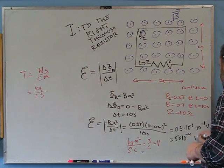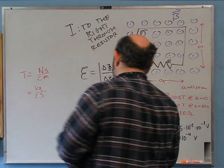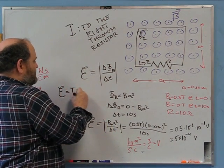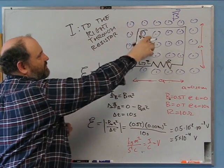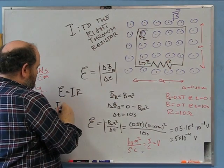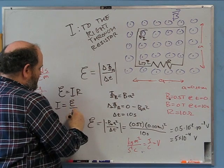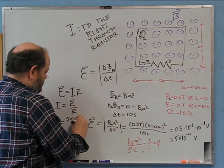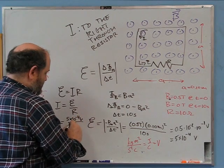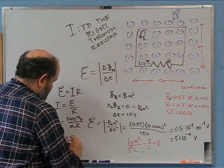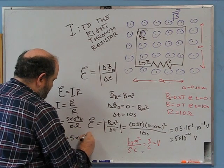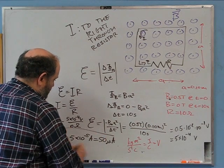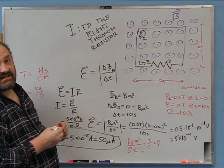What we're really after is the current. Using Ohm's law: the only resistance is at the resistor, so the current equals EMF / R = 5 × 10⁻⁴ volts / 10 ohms = 5 × 10⁻⁵ amps, which is the same as 50 microamps. That's the current you would get in that case. That's the second problem.